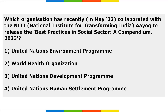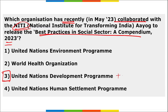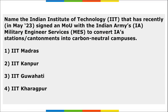UNDP — the United Nations Development Programme — partnered with NITI Aayog to release 'Best Practices in Social Sector: A Compendium 2023.' The compendium was framed to commemorate 75 years of India's independence, with case studies sourced from 28 states and union territories, highlighting the theme of achievement at 75.